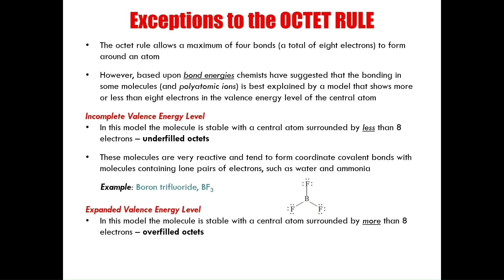An expanded valence energy level, otherwise known as an overfilled octet, has more than eight electrons around the central atom, providing the molecule with stability. An example is phosphorus pentachloride, where five chlorine atoms are bonded to one phosphorus atom, giving a total of ten electrons around the central atom.